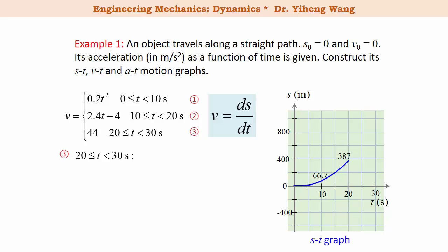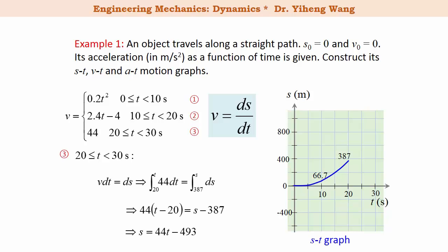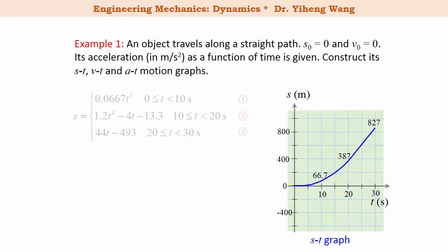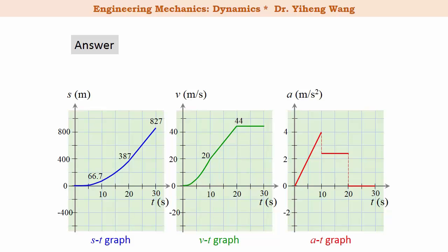For the third period, we perform the same integration being careful with the integration limits, get the last part of the s-t function, and sketch it. At the end of 30 seconds, the position has become 867 meters, and that completes the s-t graph. We organize the position as a piecewise function of time. Here are all three motion graphs — the s-t, v-t, and a-t graphs. I would advise you to study these graphs and see how they represent an original function and its first and second derivative functions.